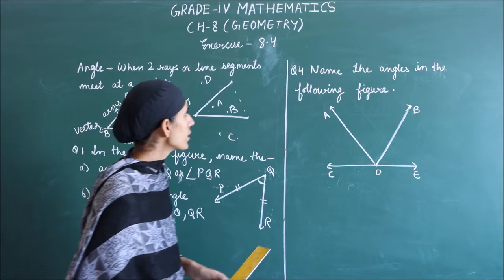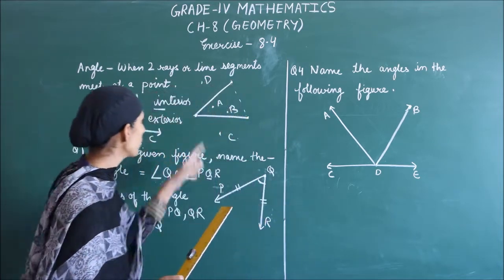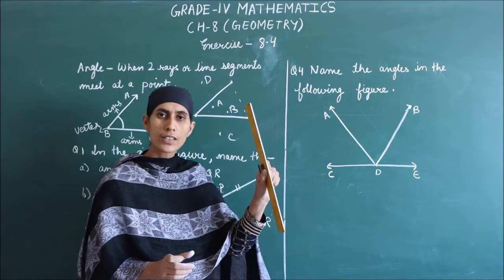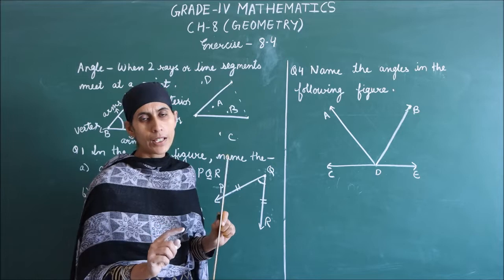Next, come to Question 4. Question 3, you have to make angles. I have to tell you, take a scale, draw two rays, and you will make an angle and give it a name.